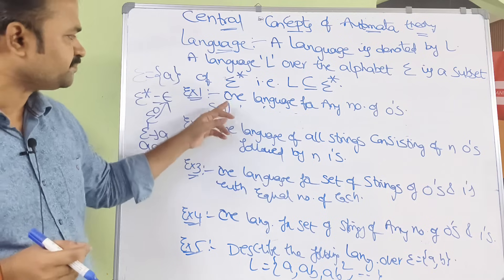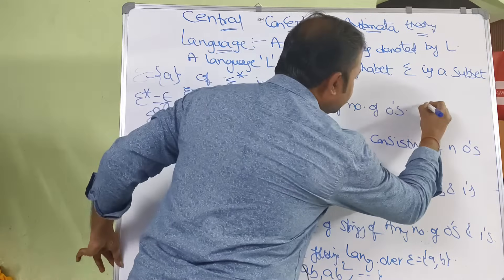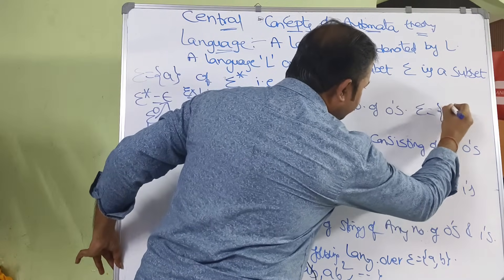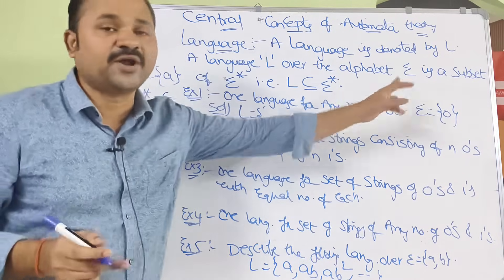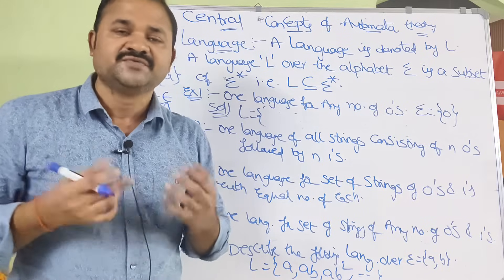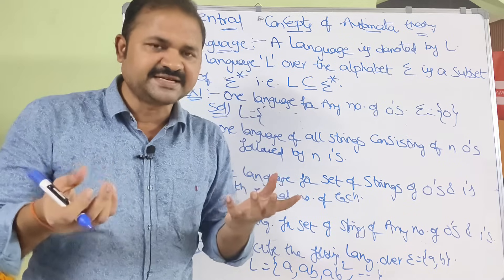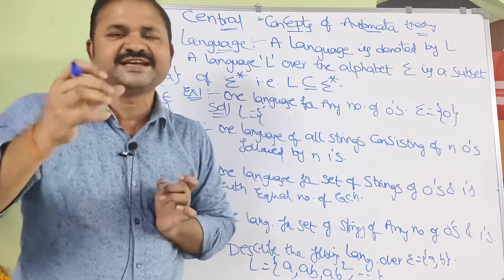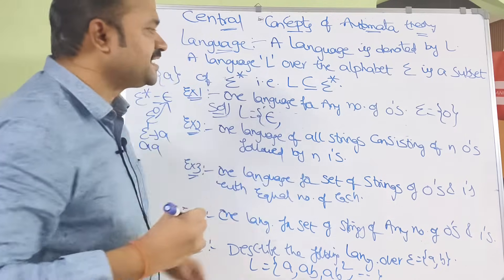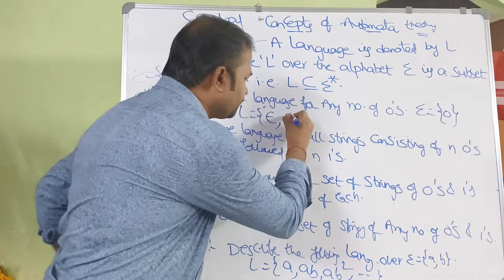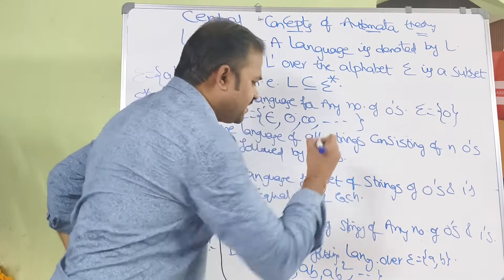First example: the language for any number of zeros. Here sigma contains only one symbol, zero. The language L includes zero number of zeros — that is epsilon — then one occurrence of zero, then two zeros, and so on for any number of occurrences.